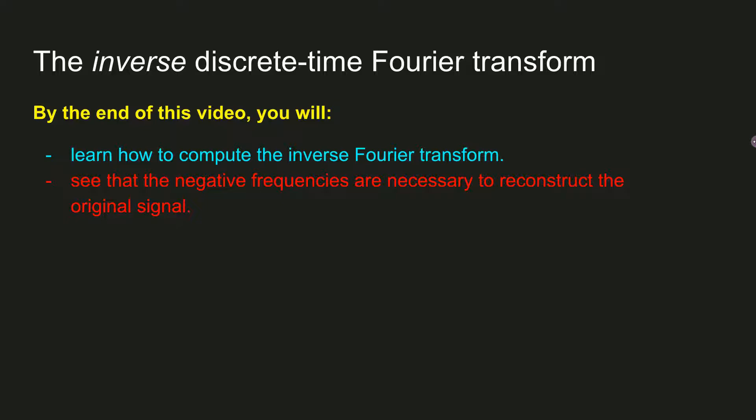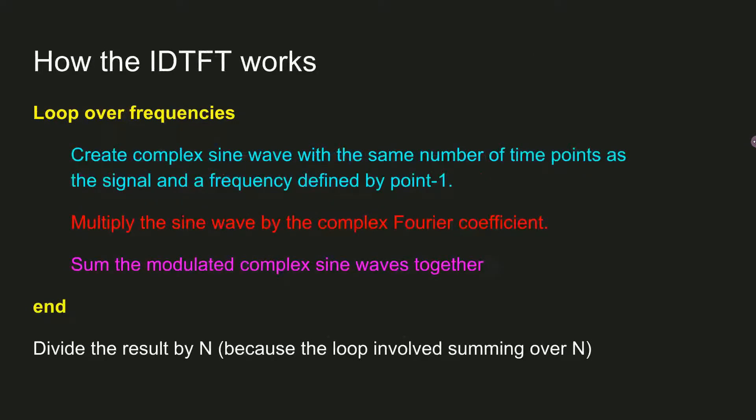The inverse Fourier transform is simply the opposite of this. We already have the Fourier coefficients, and we know the frequencies of the sine waves. So you just multiply each Fourier coefficient by its associated complex sine wave, sum all of the modulated sine waves together, and the result is the original signal. Here you can see some pseudocode for the inverse Fourier transform.